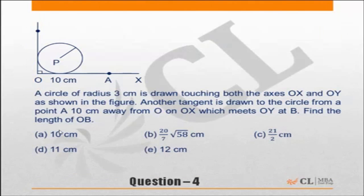A circle of radius 3 centimeters is drawn touching both the axes OX and OY as shown in the figure. Another tangent is drawn to the circle from a point A, 10 centimeters away from O on OX, which meets OY at B.